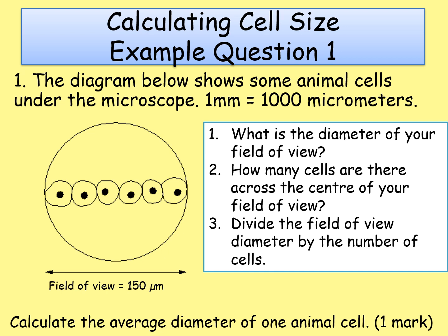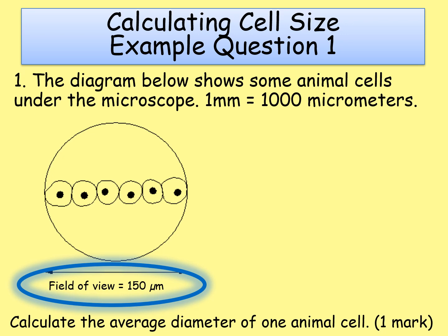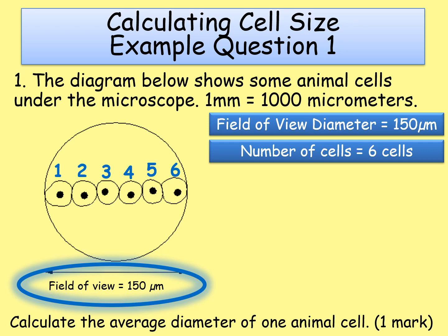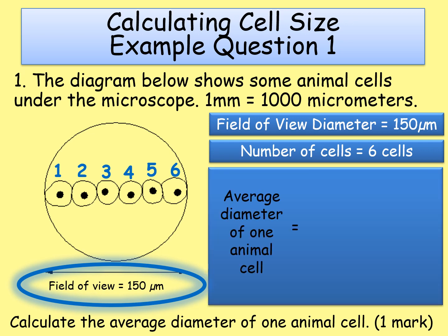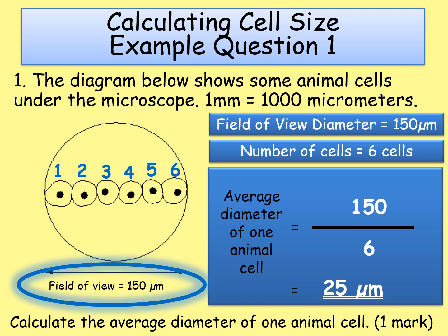Let's look at the first example question using the numbers. The diagram shows animal cells under the microscope; the field of view diameter is given as 150 micrometres — highlight that information. Next, count the cells across the centre of the field of view: there are six cells — note that down. Finally, divide the field of view diameter by the number of cells: 150 ÷ 6 = 25 micrometres. That's your answer for one mark.